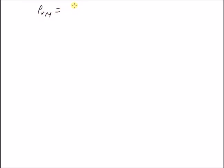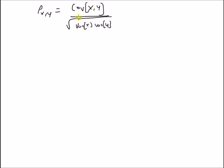Hello, welcome. In this short video, let us look at the bounds on the correlation coefficient between two random variables x and y. The correlation coefficient between two random variables x and y is defined as the ratio of covariance of x and y divided by the square root of variance of x multiplied by variance of y.